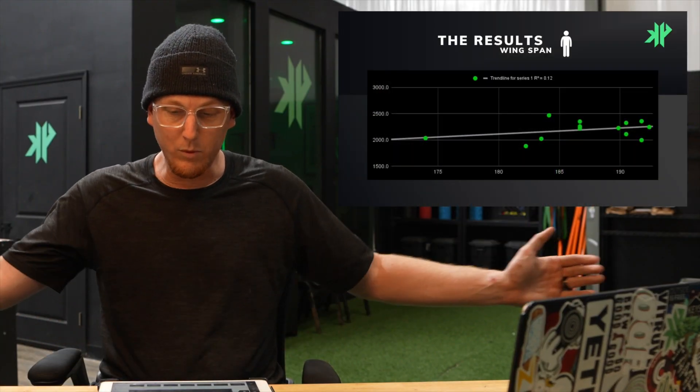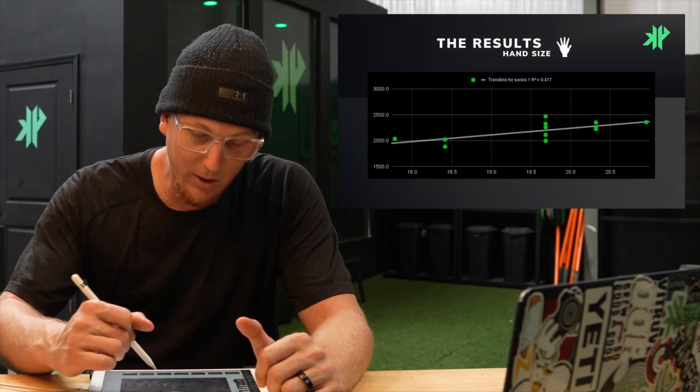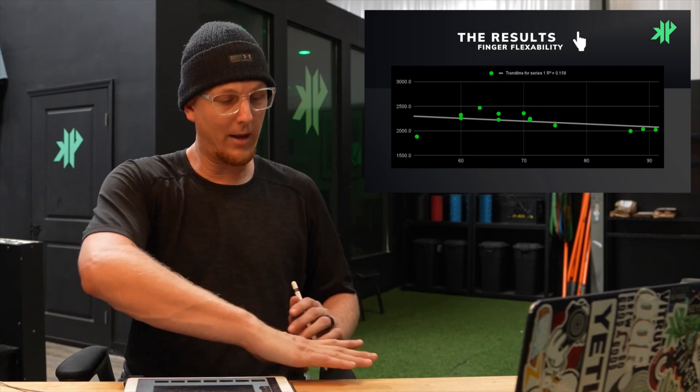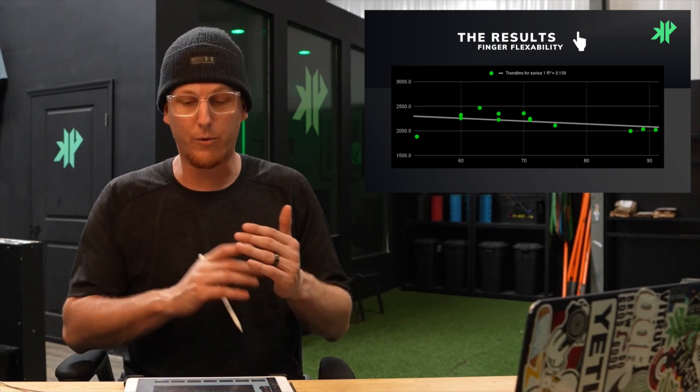Wingspan told the same story as arm length. When we looked at hand size — measured from the tip of the finger all the way down to the crease at the bottom of the hand — we saw kind of the same thing, with a lot of our athletes falling into the same area on the graph. The last piece is finger flexibility, which we also thought was going to be a potential indicator of higher spin. We used a goniometer to measure the angle as athletes pulled their finger up from the table. Our athletes varied greatly in finger flexibility; however, the impact on the pitch was not correlated to higher spin.